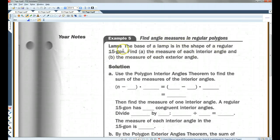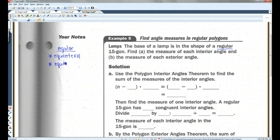The base of a lamp is in the shape of a regular 15-gon. A 15-gon has 15 sides. Find A, the measure of each interior angle, and B, the measure of each exterior angle. Okay, so two things we have to note right at the beginning. First of all, a 15-gon has 15 sides. Secondly, a regular polygon. Hopefully you guys remember, a regular polygon is equilateral and equiangular. It's very important because you're going to see that word regular a lot in these problems. That means all the sides are equal and all the angles are equal.